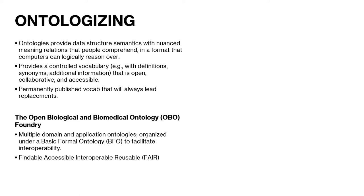Ontologies also provide a controlled vocabulary with definitions, synonyms, and additional information that is open, collaborative, accessible, and permanent. We have permanent URLs that allow you to link to published vocabulary, and even if we replace it with new vocabulary, there will be obsolescence annotations that allow you to reach those replacements.